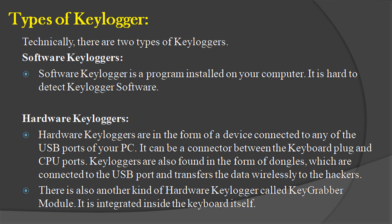Types of Keylogger: technically, there are two types of Keyloggers. Software Keylogger is a program installed on your PC, and it is hard to detect. Hardware Keyloggers are in the form of a device connected to the USB ports of your PC — it can be a connector between the keyboard plug and CPU ports. Keyloggers are also found in the form of dongles, which are connected to the USB port and transfer data wirelessly to the hackers. There is also another kind of hardware Keylogger called the Keygrabber Module, which is integrated inside the keyboard itself.